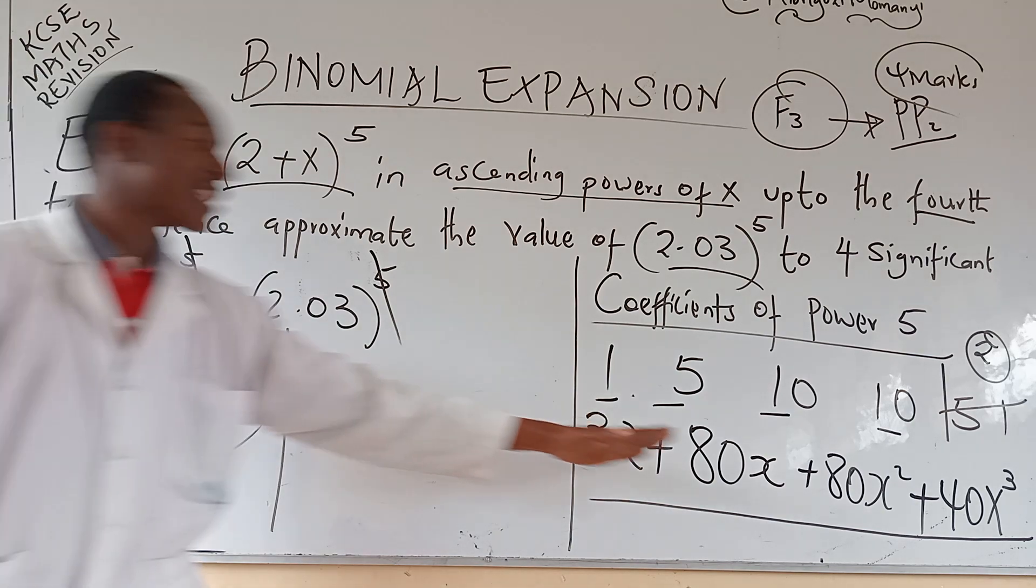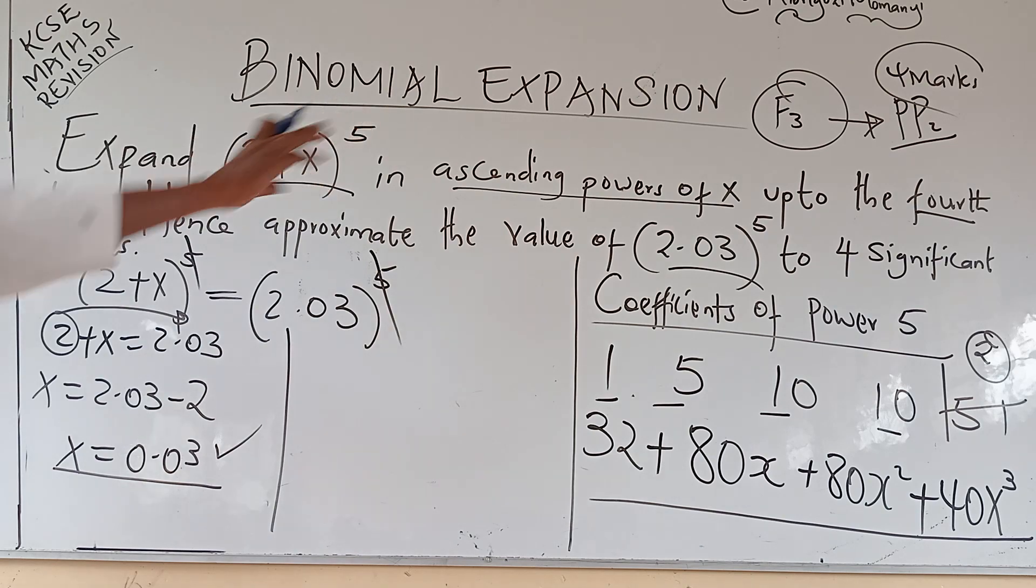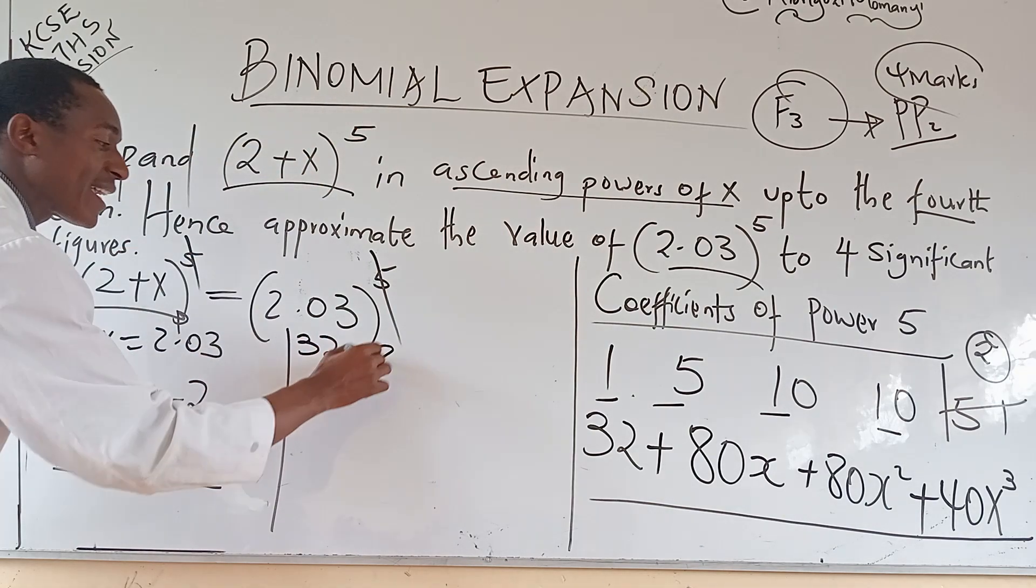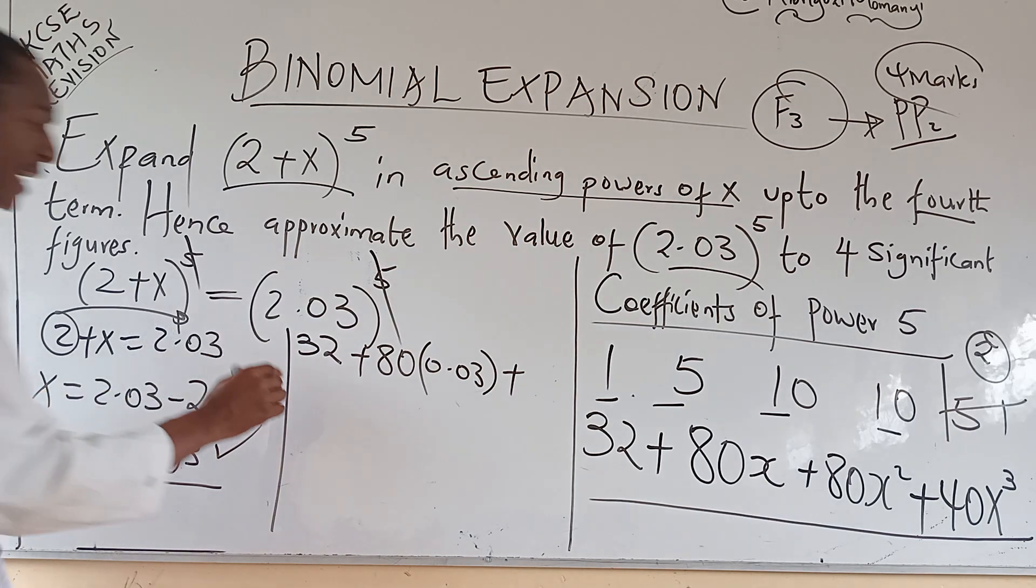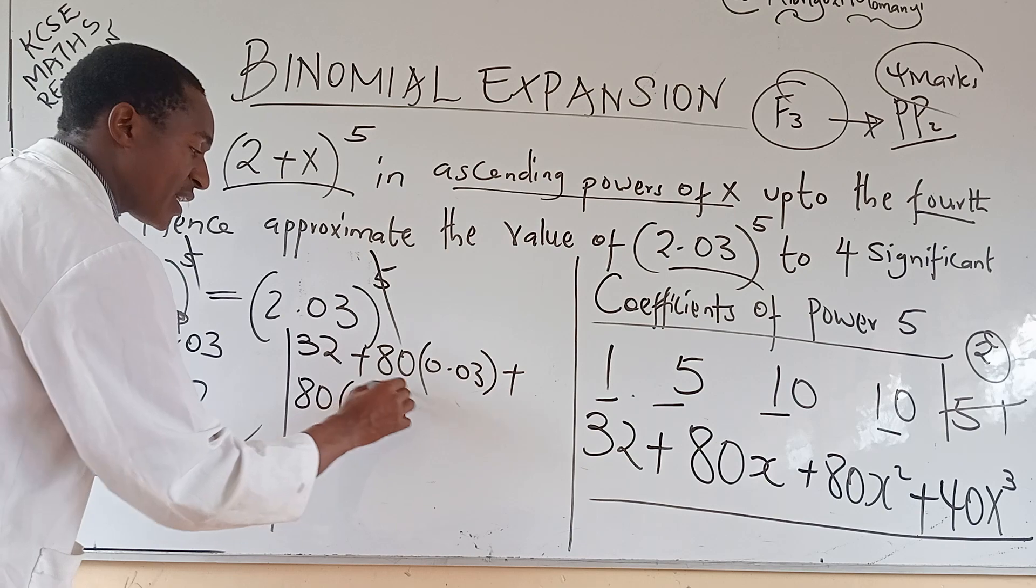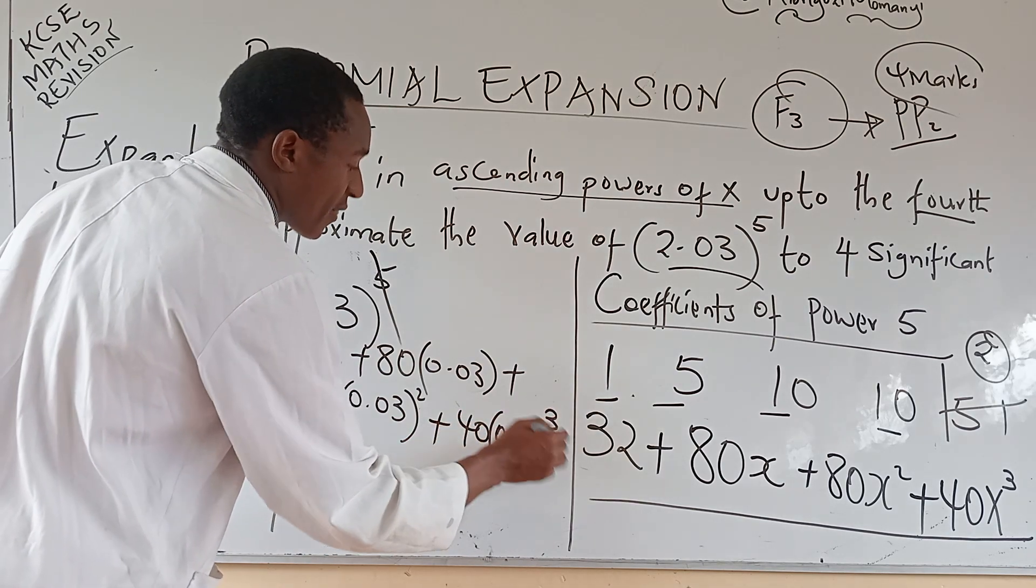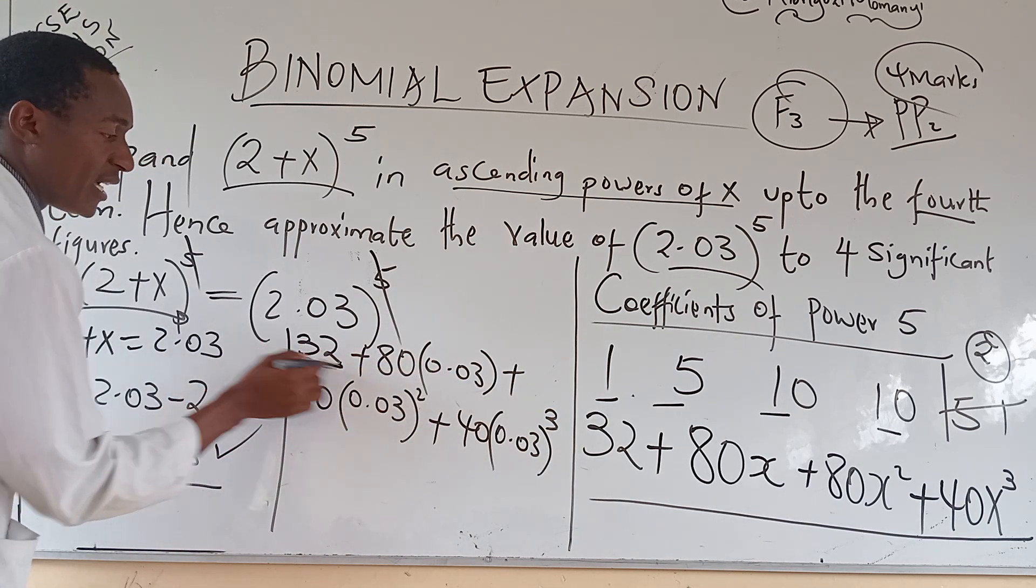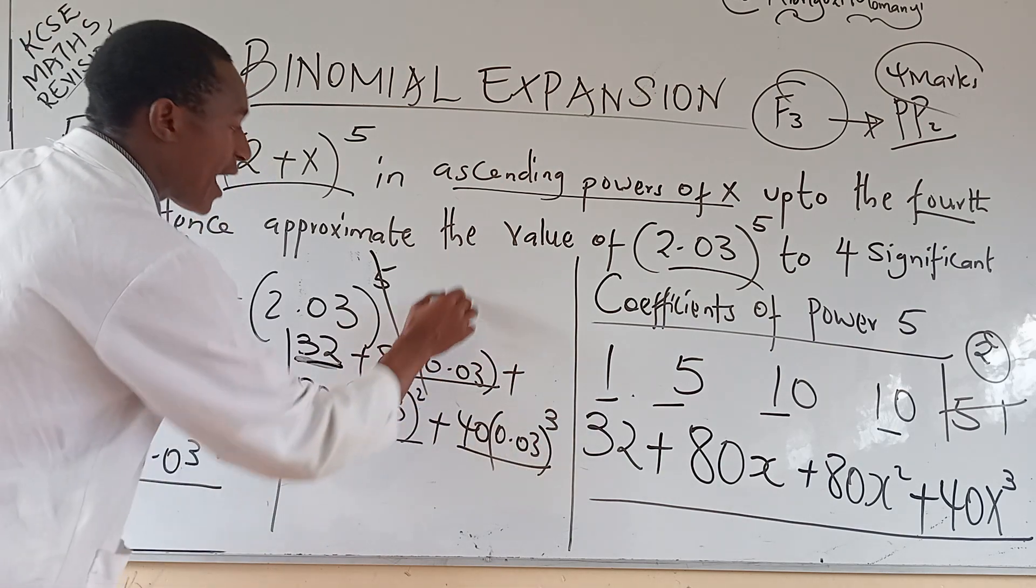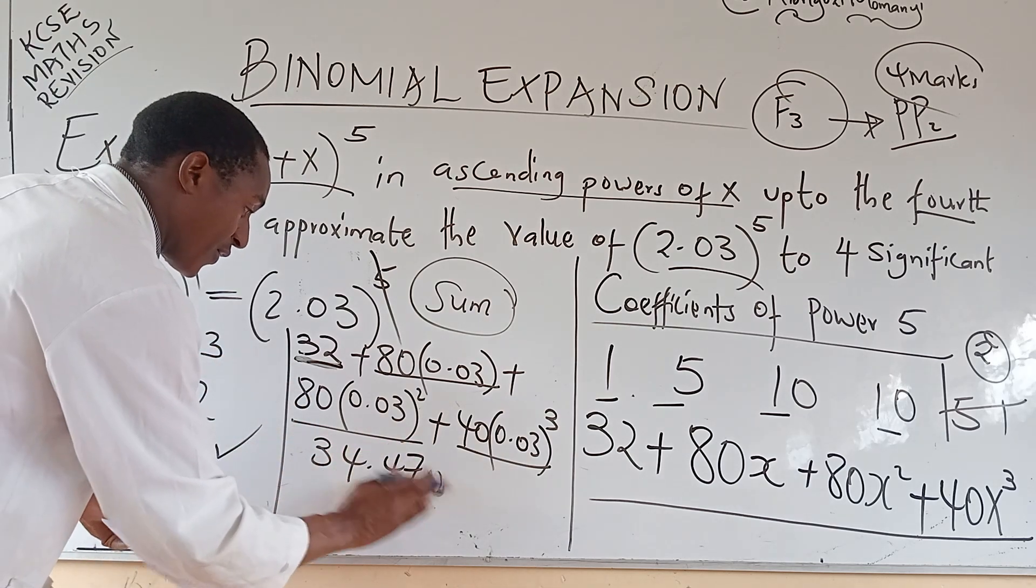Then the last mark. You take the value of x, you substitute it in the binomial expansion, use your calculator and use it properly, you get the value of the whole expansion. So this is what we have: 32 plus 80 times 0.03 plus 80 times 0.03^2 plus 40 times 0.03^3. I hope you will do them separately. Do this one separately, this one separately and this one separately. And then you do the sum of all.